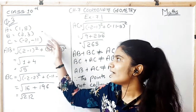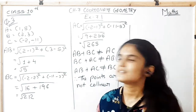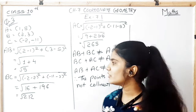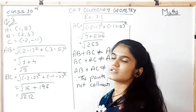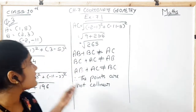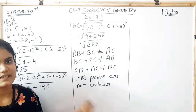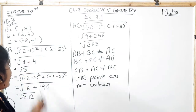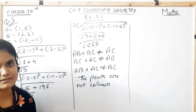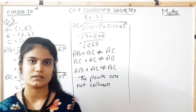Taking the three points as A, B, and C: the distance AB is √5, the distance BC is √(21) and AC is √(265). Since the sum of any two distances is not equal to the third, the points are not collinear.